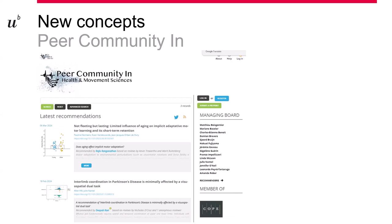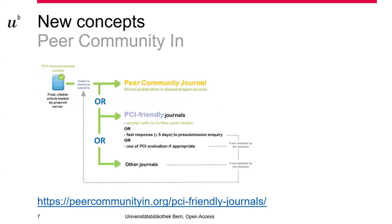Another possibility with Peer Community In is that you choose to publish your article in one of the Peer Community Journals, which are pledged to accept articles reviewed on PCI as long as they fit their profile. Or you submit your article to another journal which is PCI-friendly, or you take the review and author's reply to another journal. So you have the review process done once, and you can either publish it on the platform itself as a final citable article on the preprint server, on a peer review community journal, or another journal.